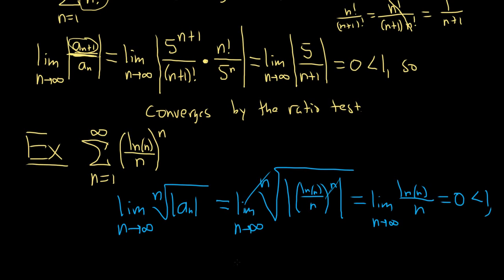And this is 0 because n grows faster than the natural log. This is less than 1. So it converges by the root test. So a really simple example, but it illustrates the point of how to go through the procedure. I hope this video has been helpful.